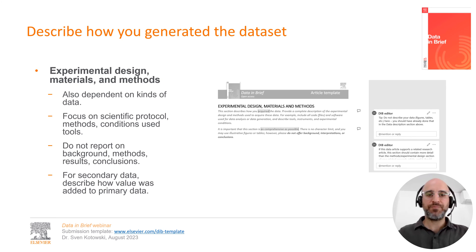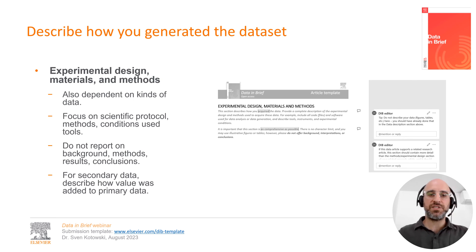Just as for the data description section, the nature of your experimental design, materials and methods section is dependent on your data. In general, this section asks you to lay out the scientific protocol that you followed, and to describe the tools that you used and the conditions that were present during the acquisition of the raw data. This is essential for other researchers who want to evaluate the quality of your data set, reproduce it, or partly improve it using different materials or methods. You should also provide code that you used for data analysis, or describe on which basis you designed questionnaires and how you distributed them. This section should not provide statistical analyses, interpretations, or conclusions. In case you are describing secondary data, this section provides the venue at which you describe how you added value to a primary data set that you did not generate yourself.